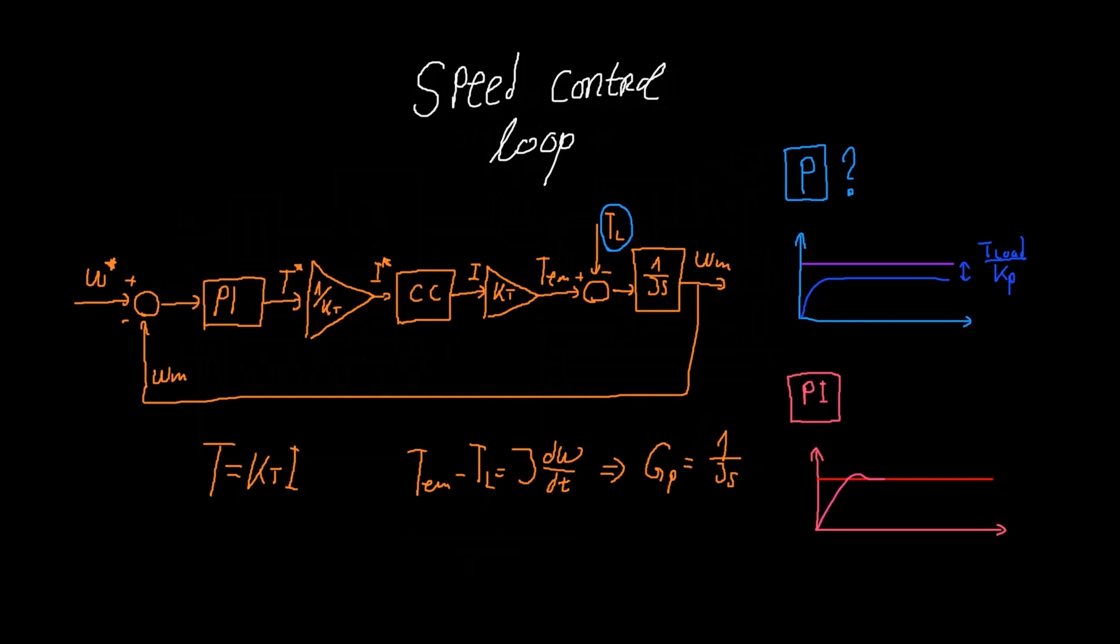So the transfer function of the PI controller is given by kp plus ki over s, and we have the transfer function of the plant which is 1 over js. So the closed loop transfer function can be written as this. And you can derive this by yourself and let me know if you have any problems with this. I will be happy to help.